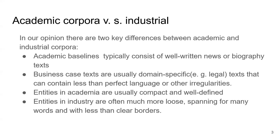The second difference is that while there are many different types of entities in academia, in the majority of cases entities that are extracted are compact and well-defined — there is little doubt where the border of an entity is located. While entities in industry are, in some cases at least, much more loose, spanning many words, with unclear borders, and so on. These are not all the differences between typical business case scenarios and academic corpora, however, in our opinion, these are probably the most important ones.